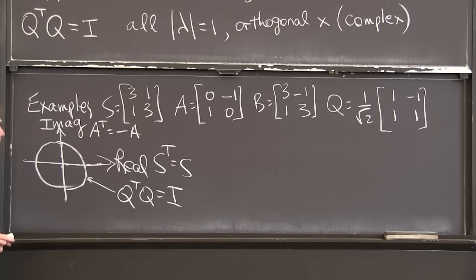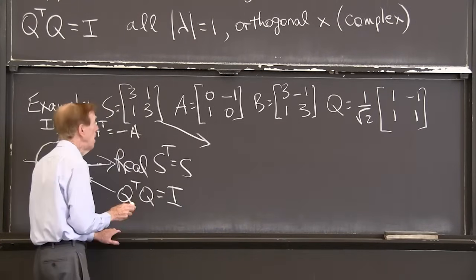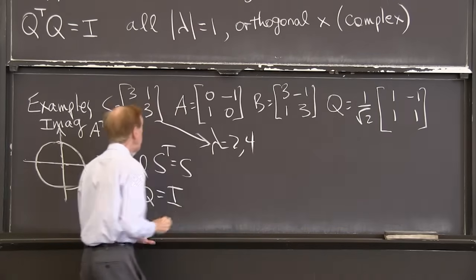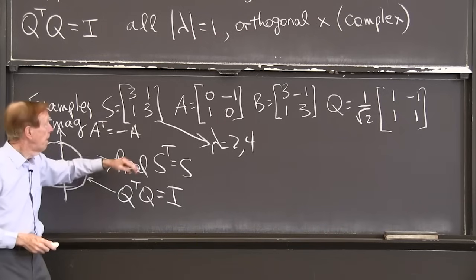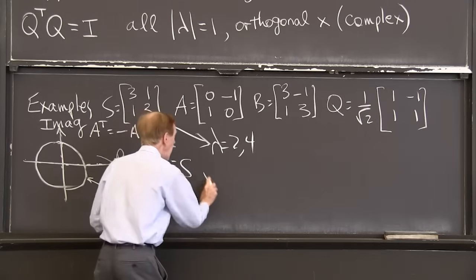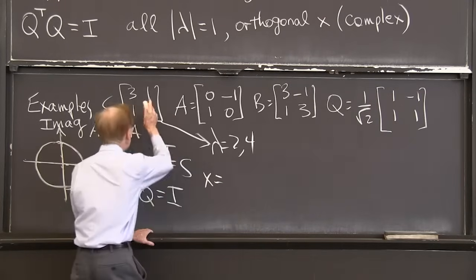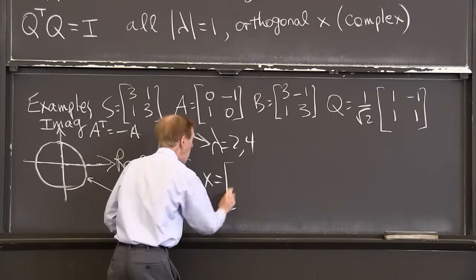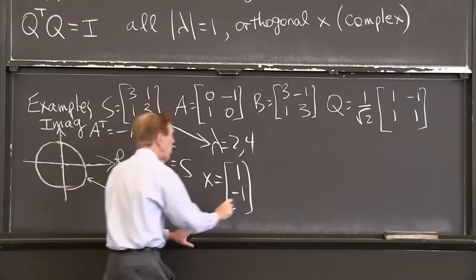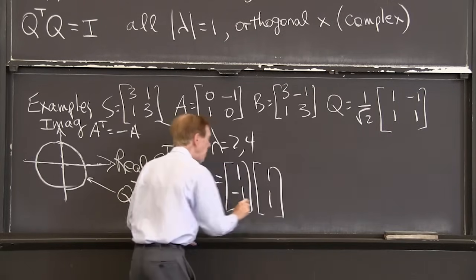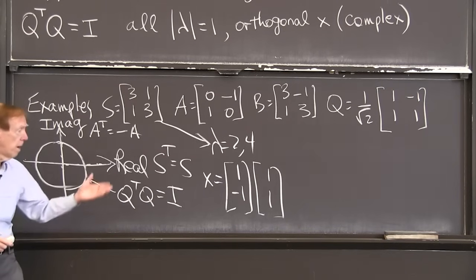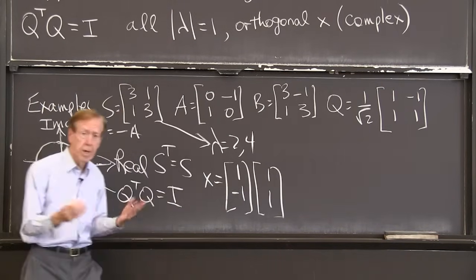Let me find them. Here that symmetric matrix has lambda as 2 and 4. The trace is 6. The determinant is 8. That's the right answer. Lambda equal 2 and 4. And x would be 1 and minus 1 for 2, and for 4 it's 1 and 1. Orthogonal eigenvectors. Take the dot product of those, you get 0. And real eigenvalues.